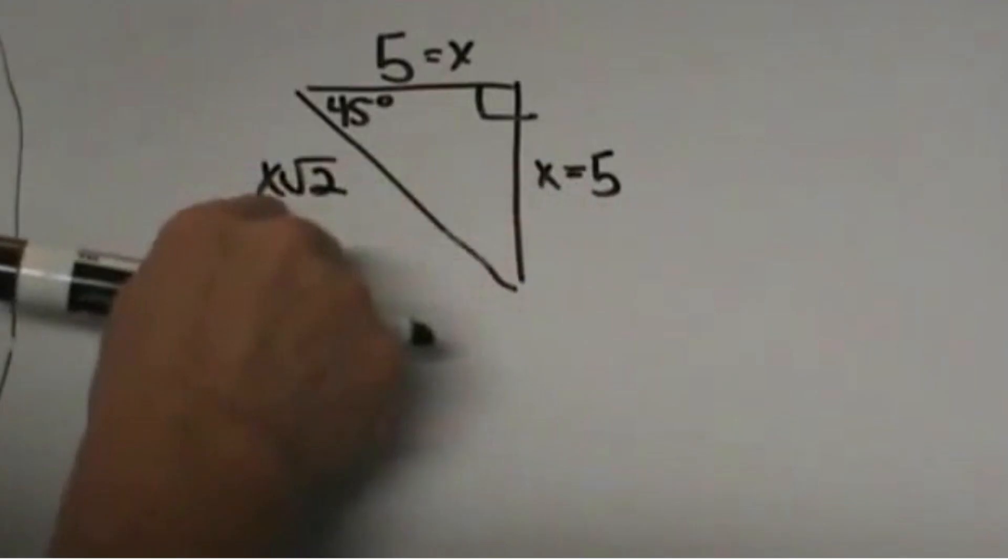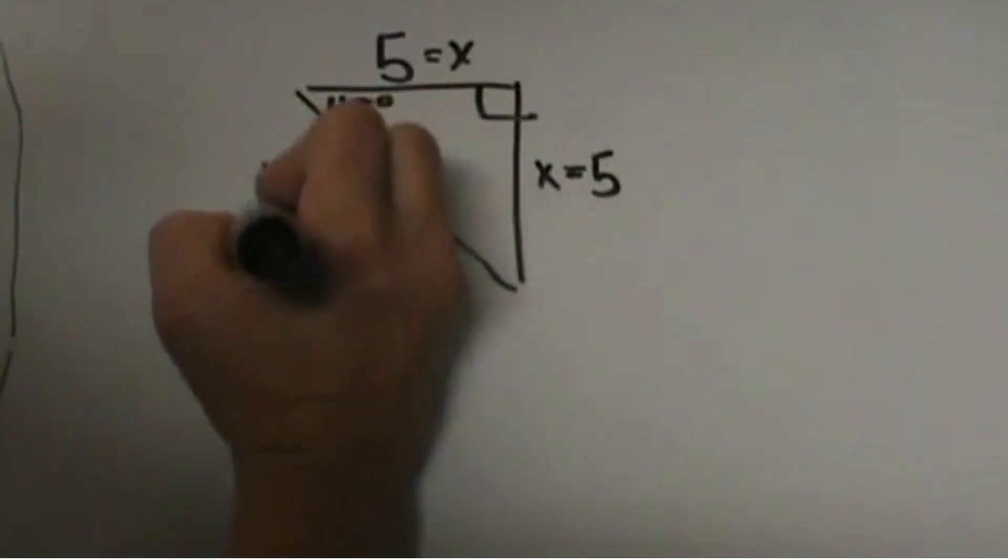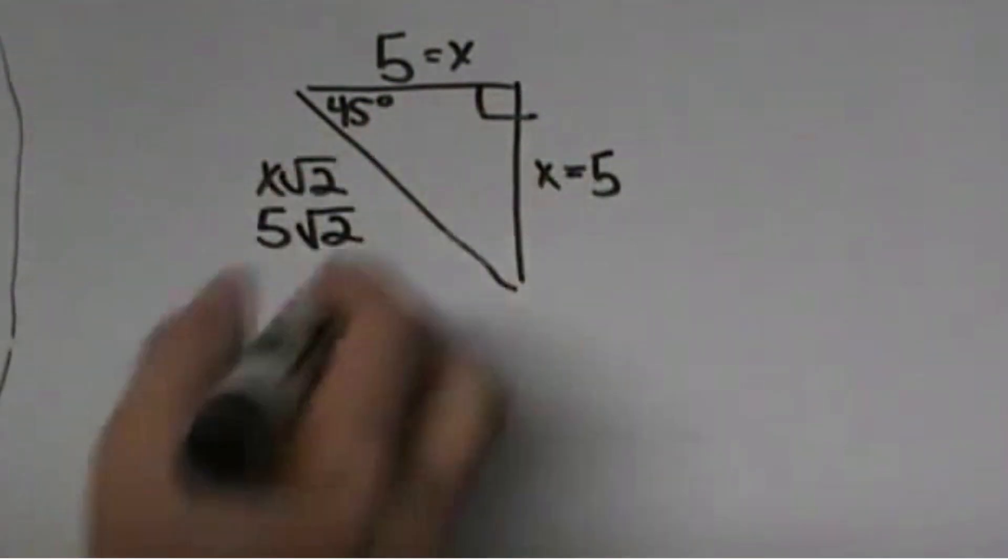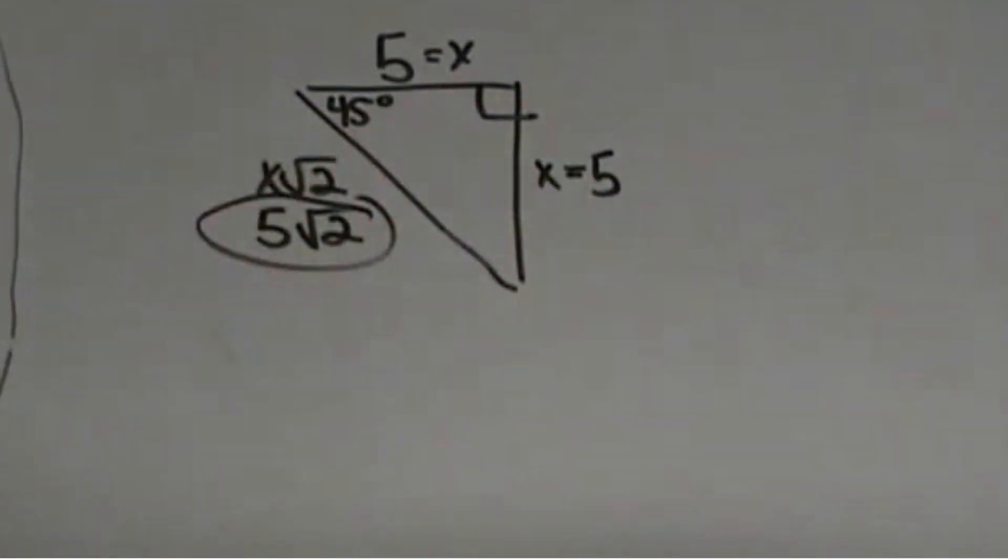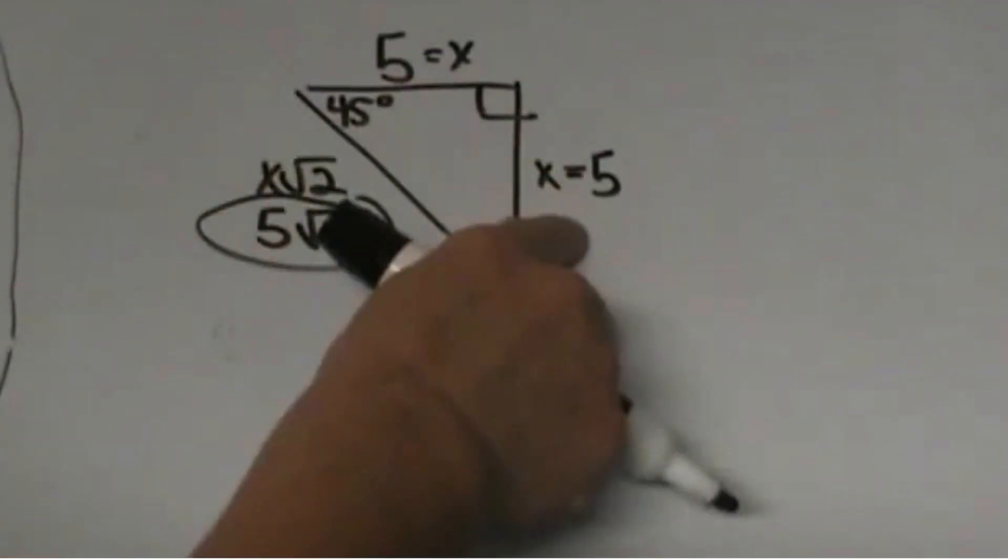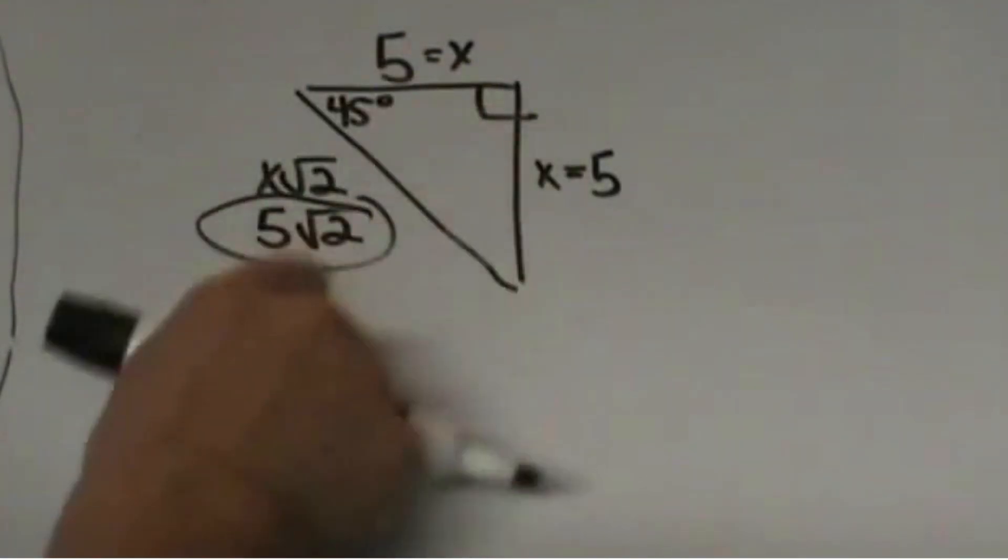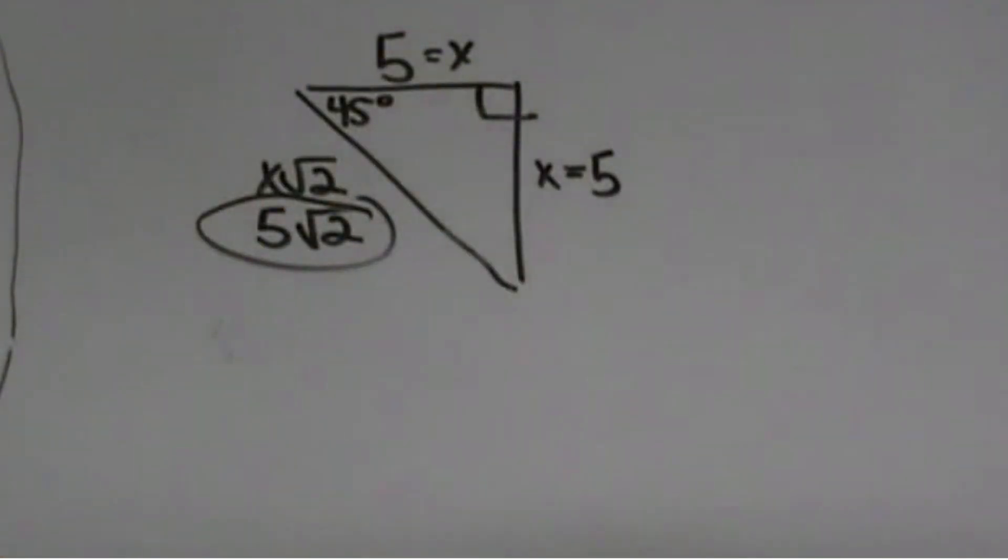Since x is 5, we are going to plug a 5 in here and take 5 times the square root of 2. That is simply how you find the hypotenuse given one of the legs. Label both the legs the same and then multiply it by the square root of 2.